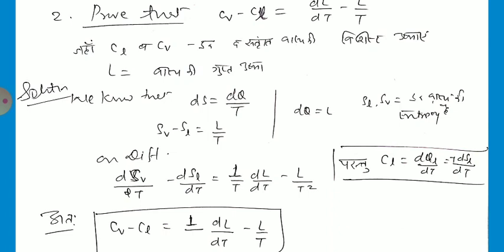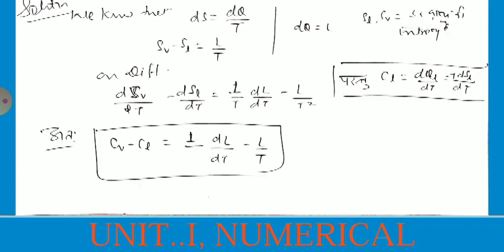So the formula is: d(Sv)/dT minus d(Sl)/dT equals 1/T multiplied by dL/dT. So Cv minus Cl equals dL/dT minus L/T.